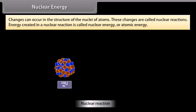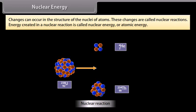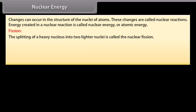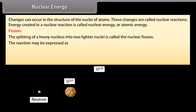Nuclear energy. Changes can occur in the structure of the nuclei of atoms. These changes are called nuclear reactions. Energy created in a nuclear reaction is called nuclear energy or atomic energy. Fission: The splitting of a heavy nucleus into two lighter nuclei is called the nuclear fission. When a slow neutron strikes a uranium-235 nucleus, it is absorbed by the nucleus and an unstable isotope of uranium U-236 is formed which immediately breaks into two fragments emitting two or three neutrons with release of enormous amount of energy. The reaction may be expressed as...